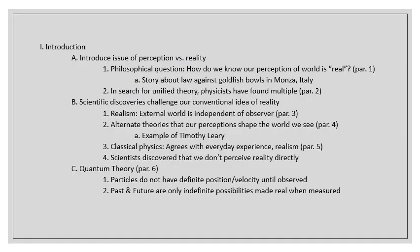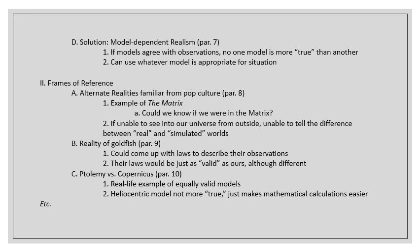Here's an example of what an outline might look like — I've put together a possible outline of the first few paragraphs of 'Elusive Theory of Everything.' It shows main ideas such as introducing the idea of perception versus reality, scientific discoveries that challenge our conventional ideas, and defining quantum theory. Under each main idea I've broken down specific details: the idea of realism, alternate theories, classical physics, the definition of quantum theory, their solution of model-dependent realism, and moving into section two 'Frames of Reference.' I'll put a copy of this on Blackboard so you can compare it to the essay itself and use it as a model for drafting your own outline.